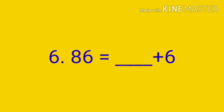Number 6. 86 equals to dash plus 6. Yes, children, what will be the answer? Yes, very good — it is 80. So 86 equals to 80 plus 6.